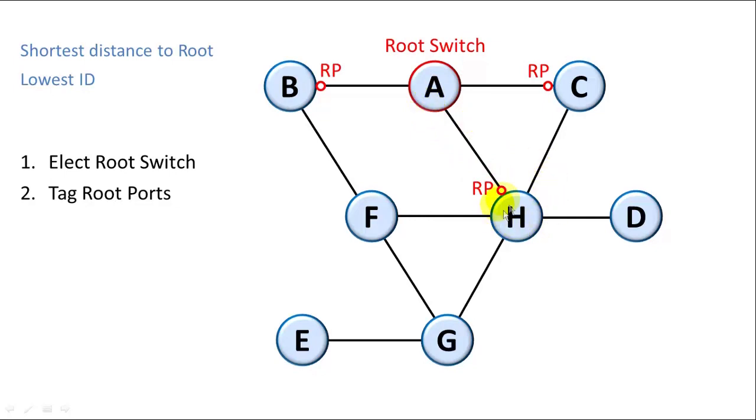So in other words, if H wants to forward traffic to the root, it's going to send it to this port. Switch D, we're going to label this as the root port because it has the shortest path to A. The only path actually.